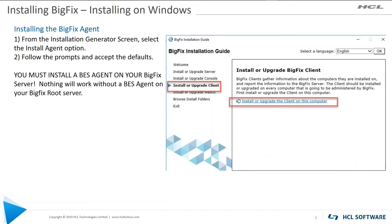So let's install an agent. After you install the console, from the installation generator, select Install or Upgrade Client and follow the prompts. The only thing you really want to change is if you don't want it on the C volume and want it on some other volume. Note that you must install a BigFix agent on your BigFix server — we use this for almost everything, so the agent is our workhorse. If you don't install it, nothing's going to work, so make sure you install it.